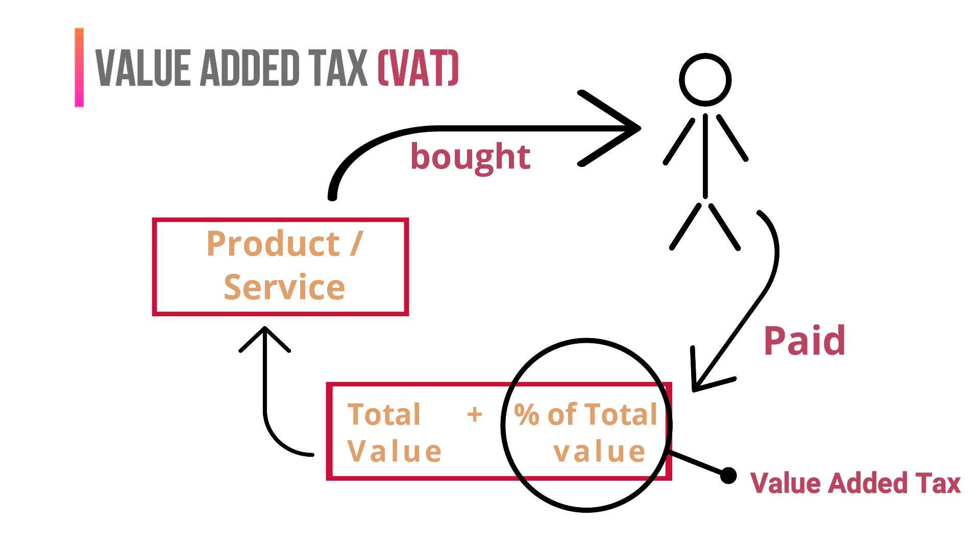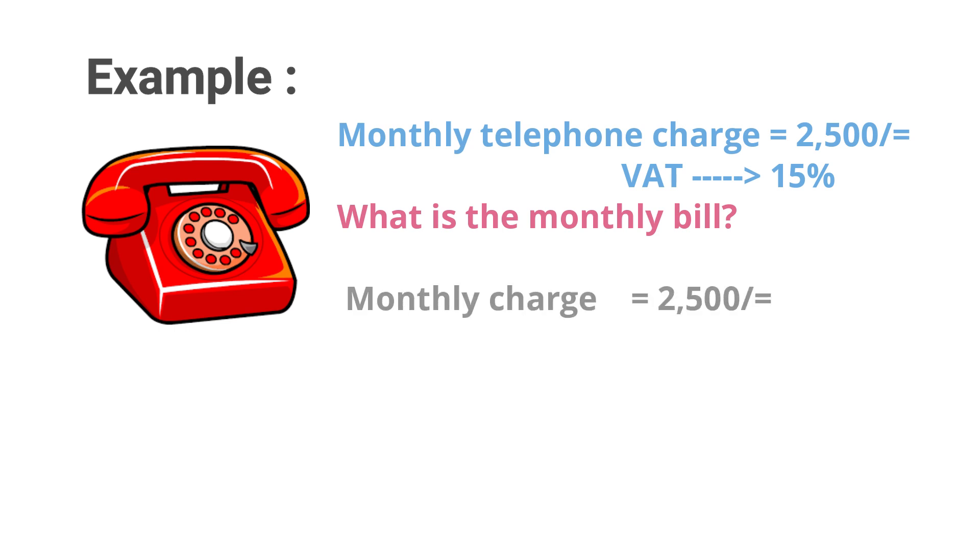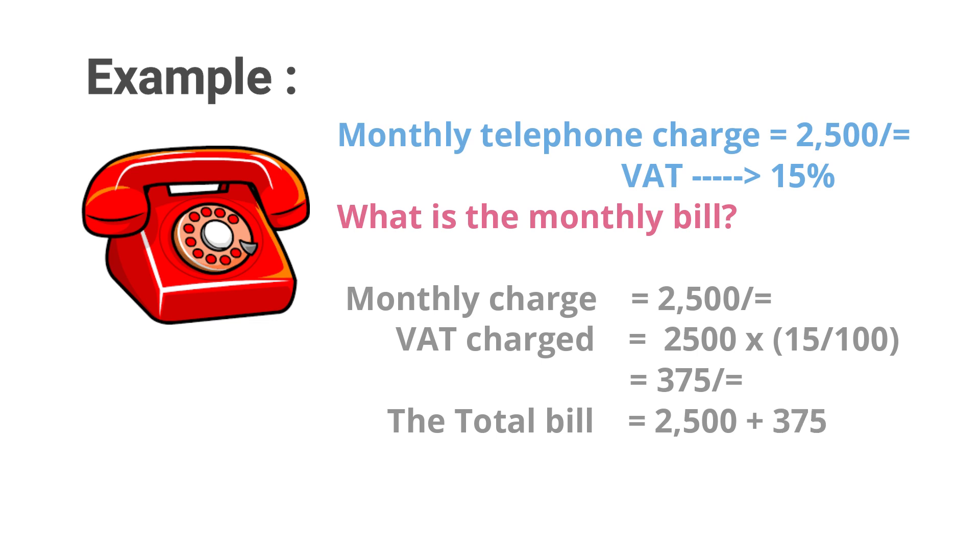Let's have a look at an example. The monthly telephone charge of a person is 2,500 rupees. A VAT of 15 percent is charged. What will be the monthly bill? If the monthly charge is 2,500 rupees, 15 percent of it is gained by multiplying 2,500 into 15 over 100. This gives 375 rupees. So total will be the monthly charge plus the VAT, that is 2,500 plus 375, which is equal to 2,875 rupees.